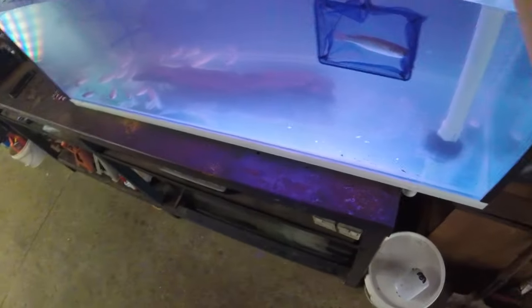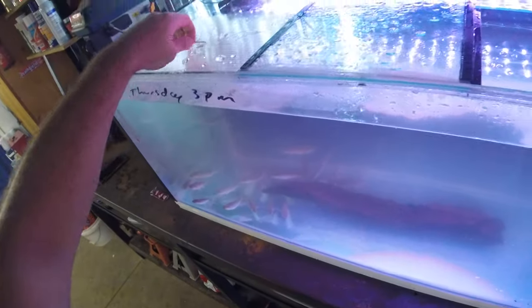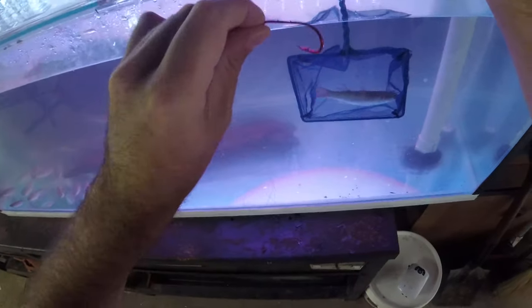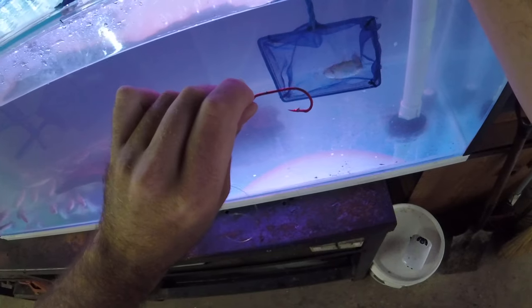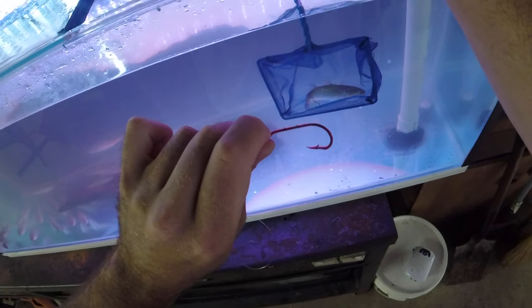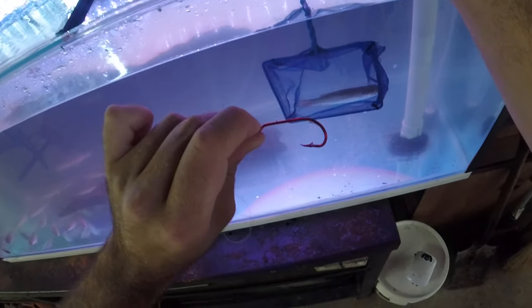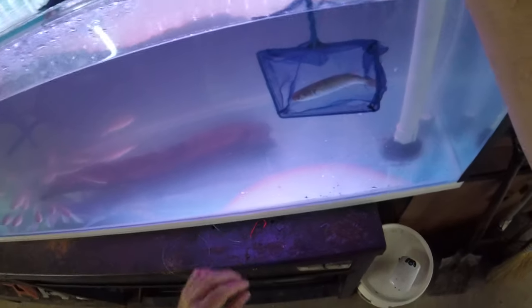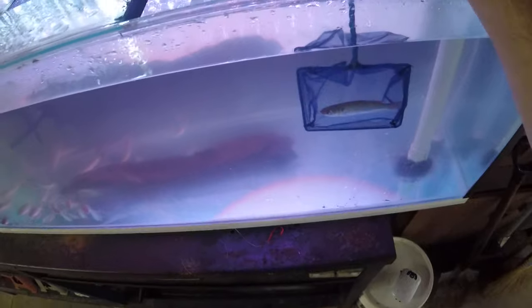First of all, I want to tell you what type of hook I like to use. I like to use 4-0 bait holder, that's my preferred hook, and I'm going to show you two ways how I like to rig these guys up.